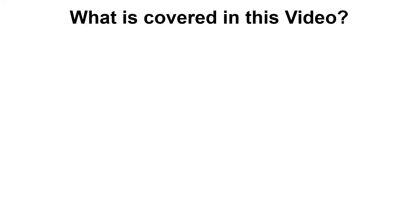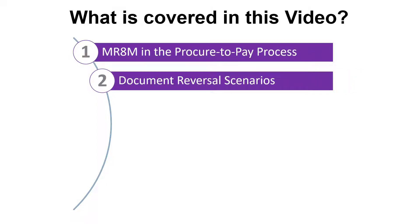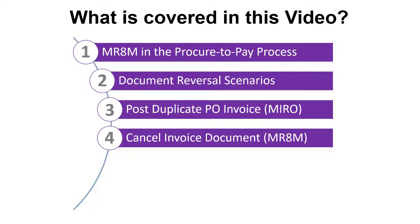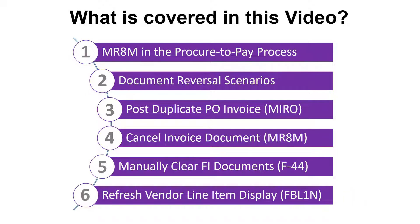Here's our list of topics. First up, we'll confirm where transaction code MR8M fits in the Procure2Pay process. We'll then review the scenarios where a document requires reversal. In order to manufacture a reversal scenario, we'll post a duplicate PO invoice using transaction MIRO. We'll then cancel the duplicate invoice using transaction MR8M. As you'll see, the vendor line items for the duplicate invoice and the invoice cancellation are not automatically cleared against each other. With cancellation of PO invoices, there's an additional step to manually clear the FI documents using transaction F-44, to avoid the documents being included in the payment run and appearing on the vendor remittance advice. The vendor line item display, transaction FBL1N, can then be refreshed to demonstrate the impact of the manual clearing.